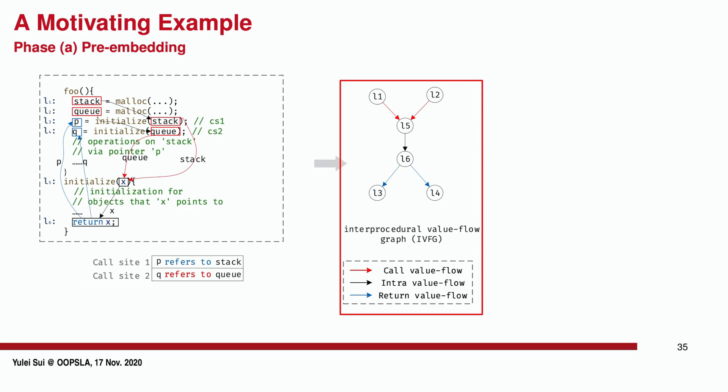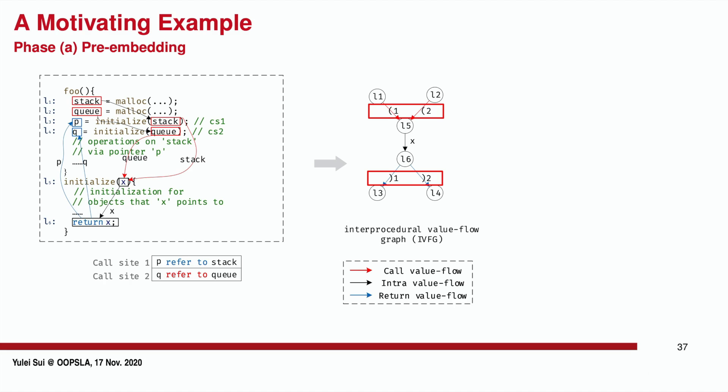The pre-embedding phase first builds an IVFG on which each node represents the definition of a variable at a program statement, and each edge represents the def-use relation of a variable. The red and blue edges denote the interprocedural call and return value flows. The black edge is the intraprocedural value flow within a method. The call and return edges are annotated with left parentheses and right parentheses respectively, and also labeled with their corresponding numbers to distinguish these two call sites CS1 and CS2.